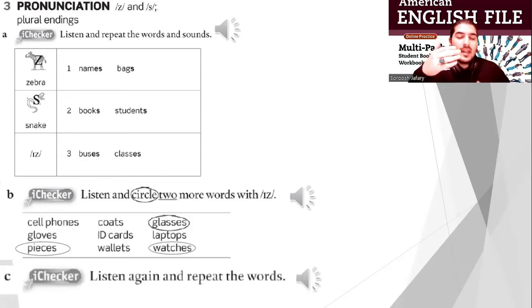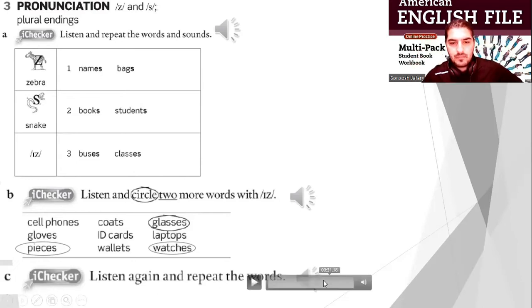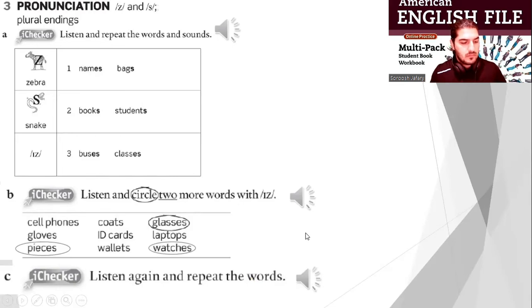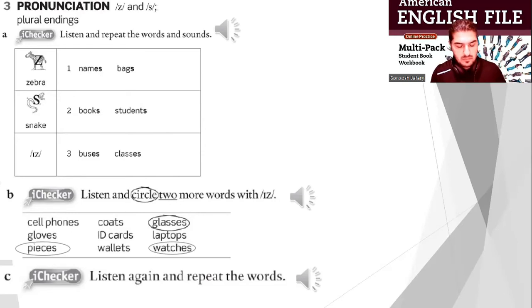Now listen again and repeat: cell phones, coats, glasses, gloves, ID cards, laptops. Okay, very nice, very good.